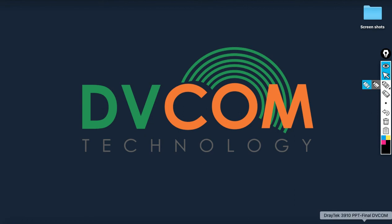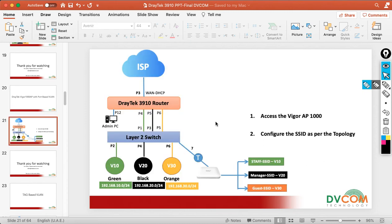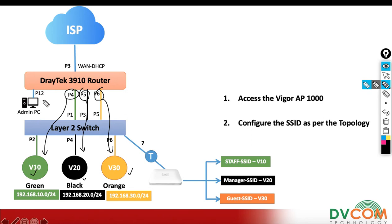Welcome to DVCOM Technology. In this lab I am going to show you how to configure the Vigor 1000 AP C series access point. Before we start the configuration, let's understand the network topology. In my layer 2 switch I have configured three VLANs: VLAN number 10, VLAN number 20, and VLAN number 30. In my Vigor 3910 router, port number 4 is shifted into VLAN 10, port number 5 into VLAN 20, port number 6 into VLAN 30, and my admin PC is connected on LAN 1 on port number 12.